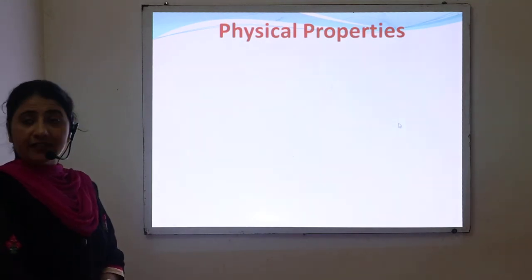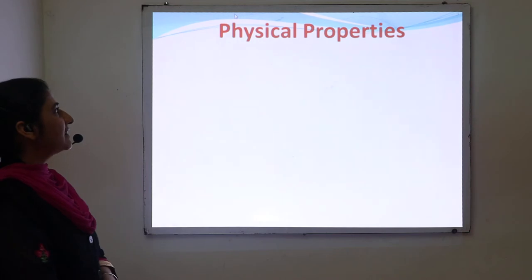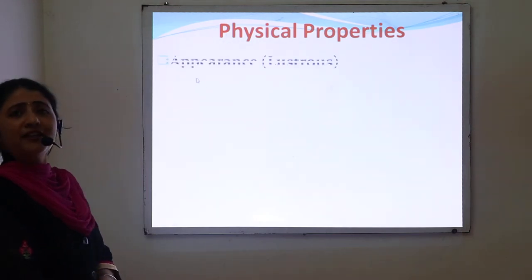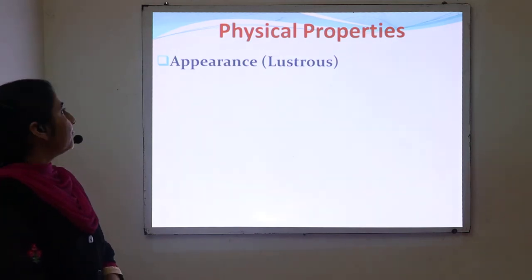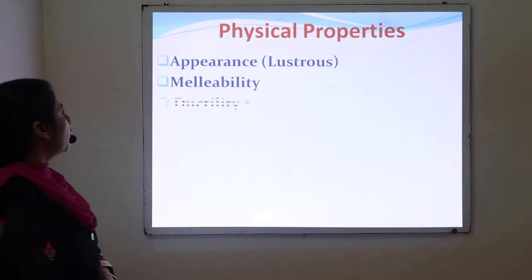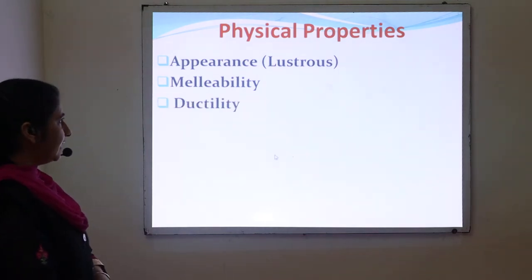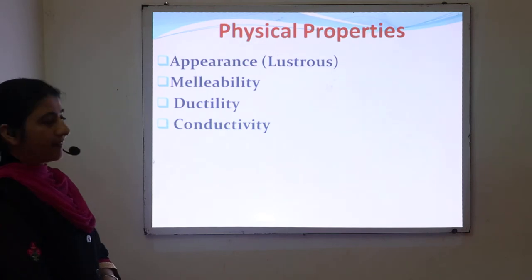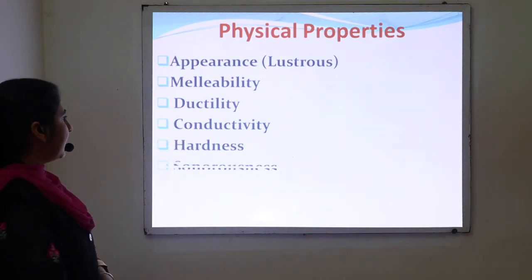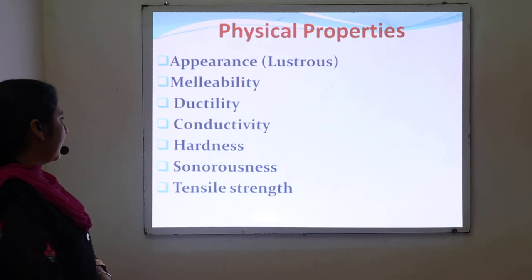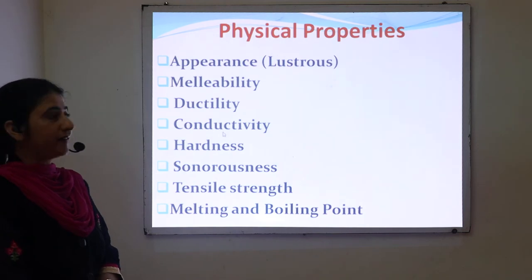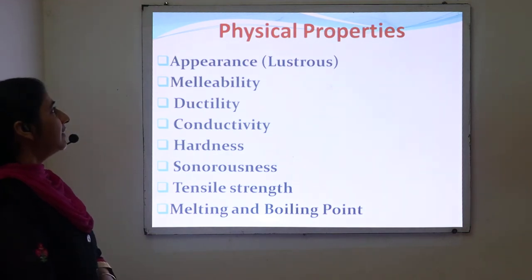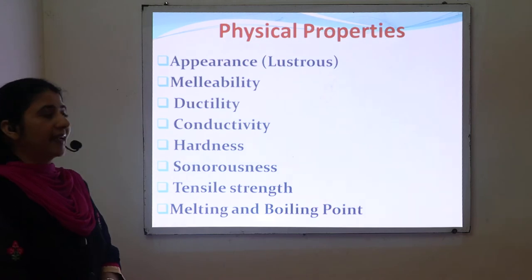I will discuss the physical properties of metals and non-metals. We have various physical properties such as: number one, appearance or lustrous; second, malleability; third, ductility; fourth, conductivity; fifth, hardness; next, sonorous; next, tensile strength; and the last one, melting and boiling point. These are the physical properties we will discuss in this lecture.